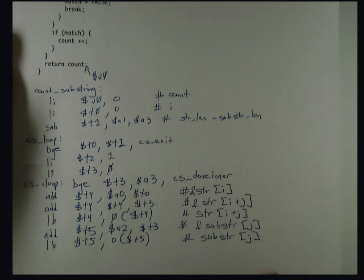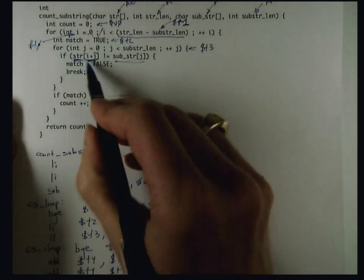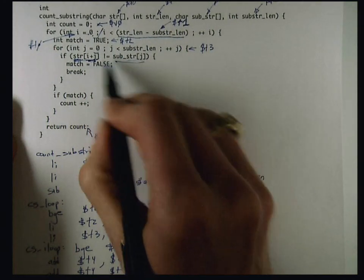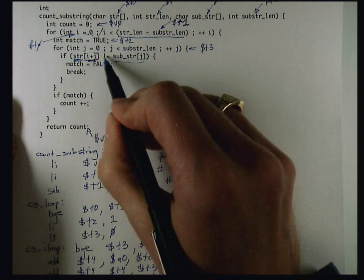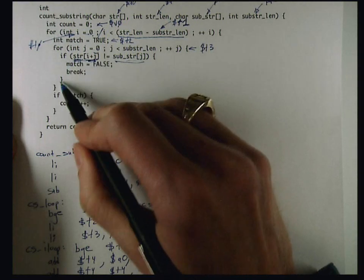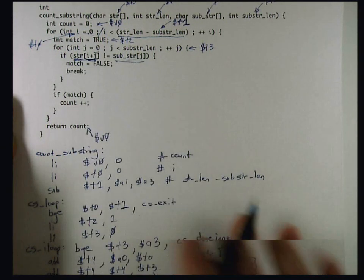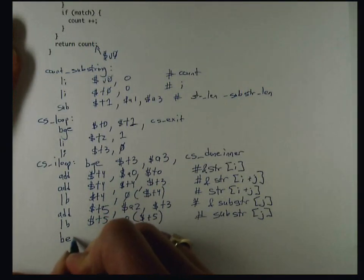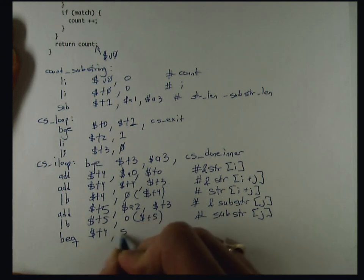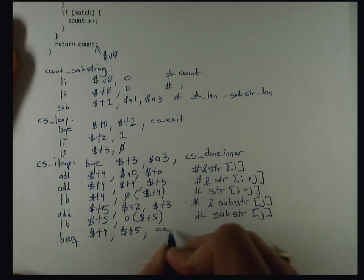Now I'm in a position to do this comparison, so I have this character, and I have this character, and I can check to see if they're not equal. Again, I'm going to invert the condition, so I'm going to check whether it's equal, and if so, skip over this. So now I have a branch if equal, see if T4 is equal to T5, and if so, I'm going to go to CS skip.